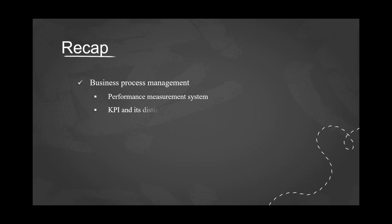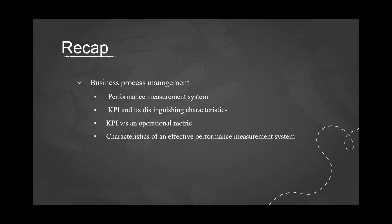We explored key performance indicators and its distinguishing features. We studied about how key performance indicators differ from an operational metric. We also explored characteristics of an effective performance management system. We highlighted the Balanced Scorecard and explored its four perspectives. We discussed Six Sigma and its methods, and then had a comparison between Six Sigma and Balanced Scorecard.